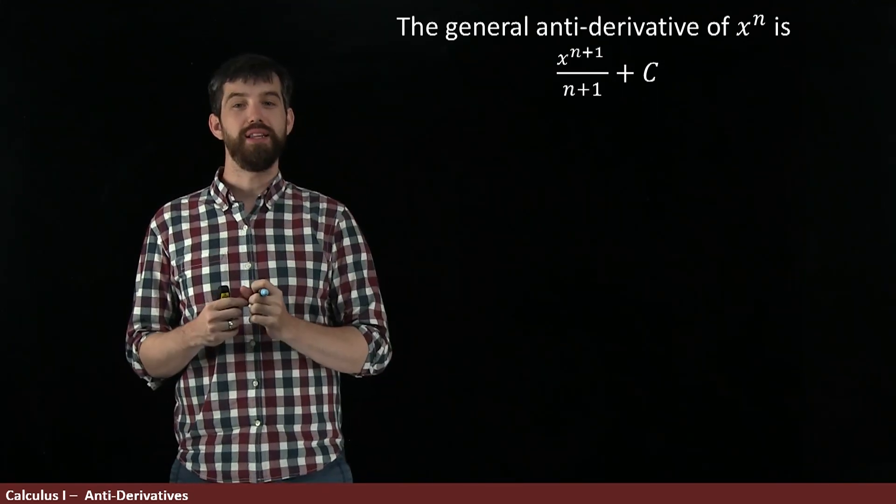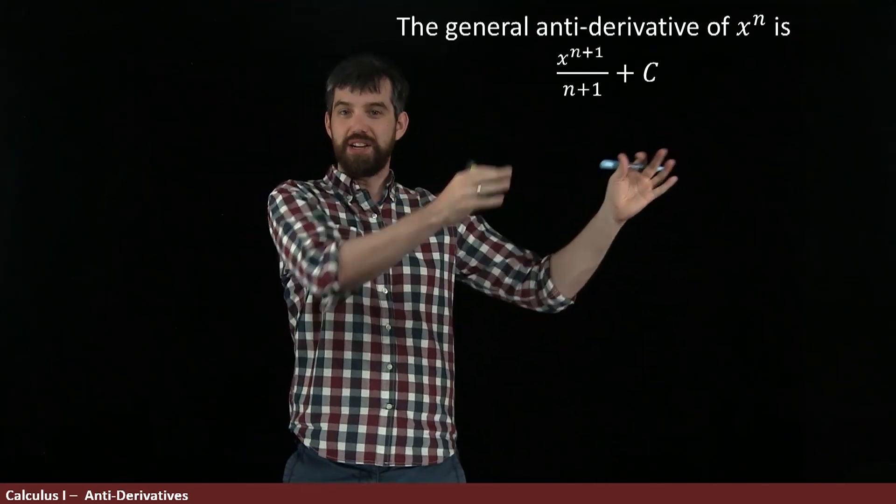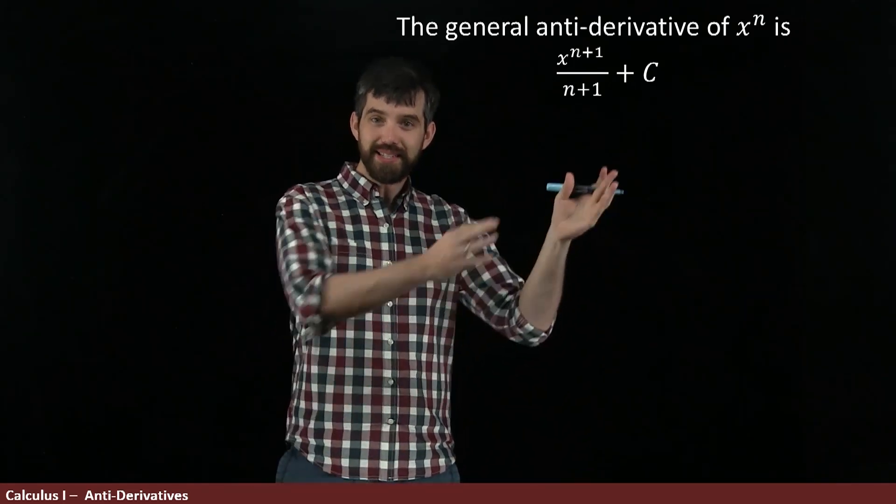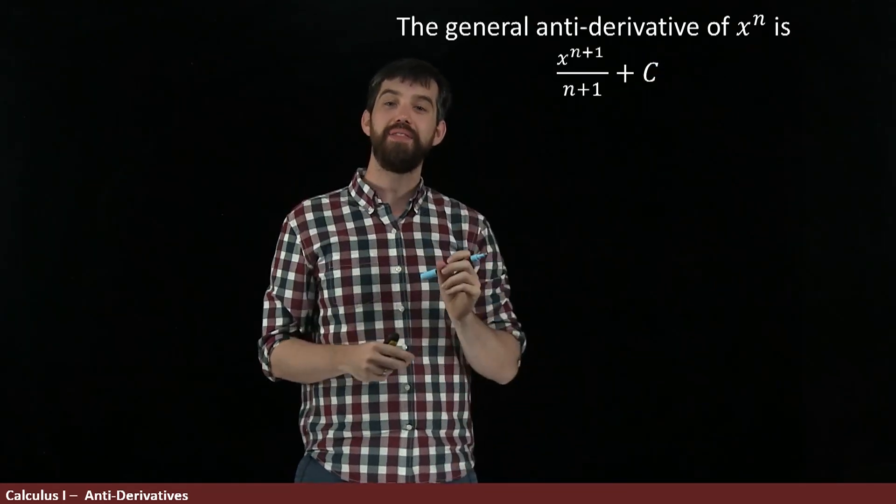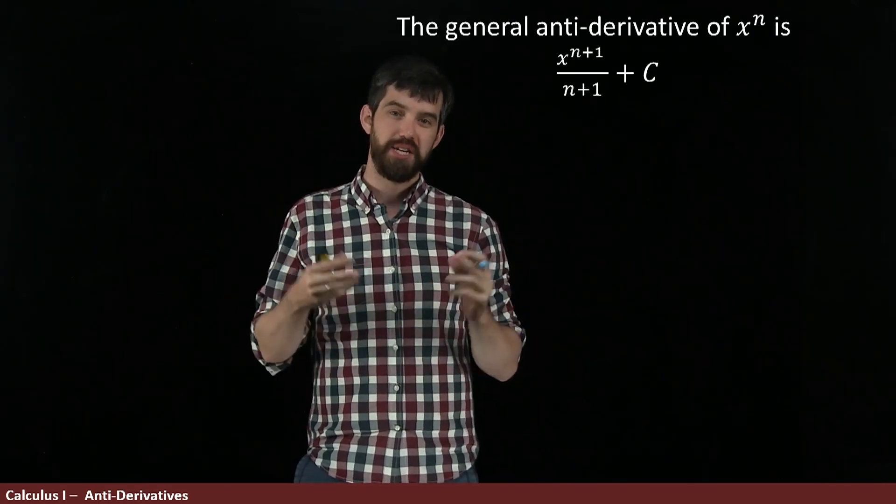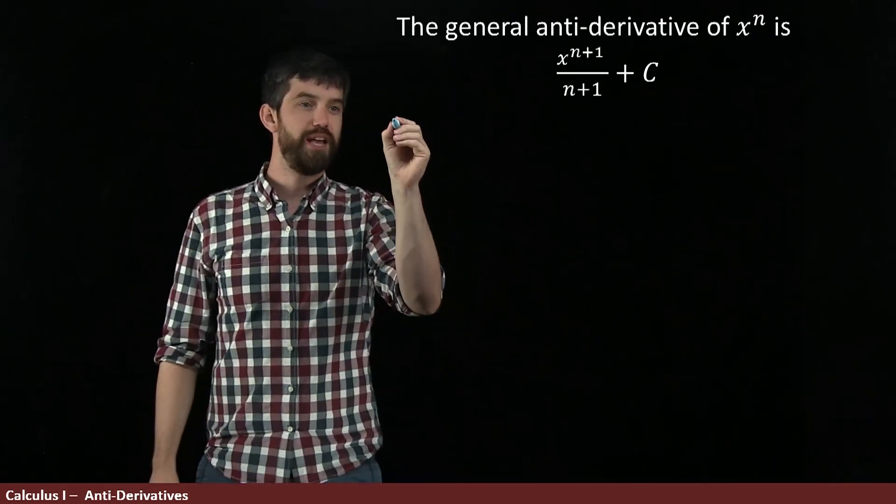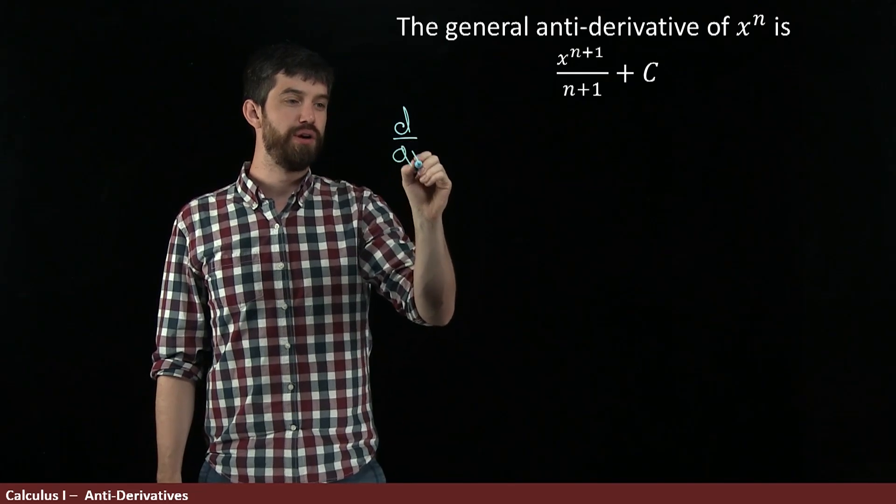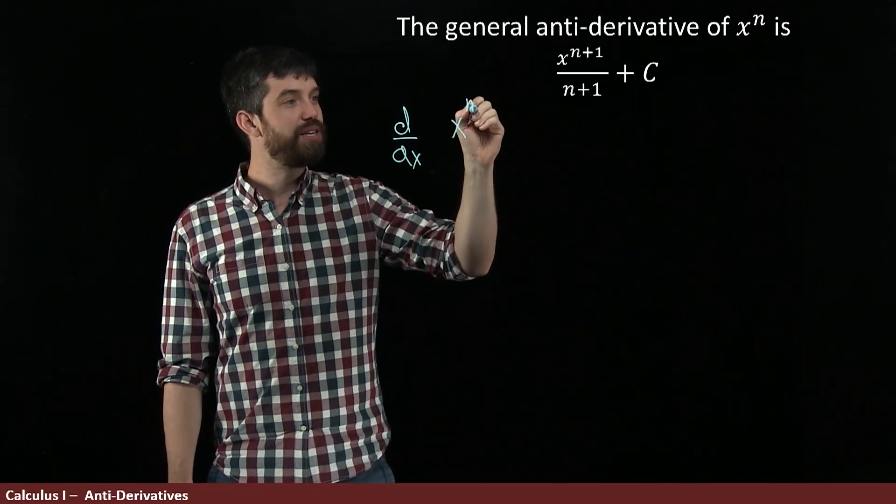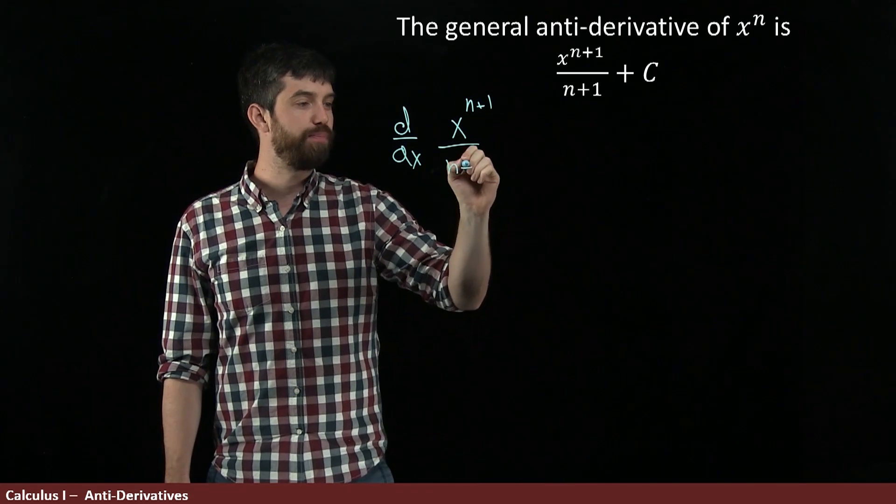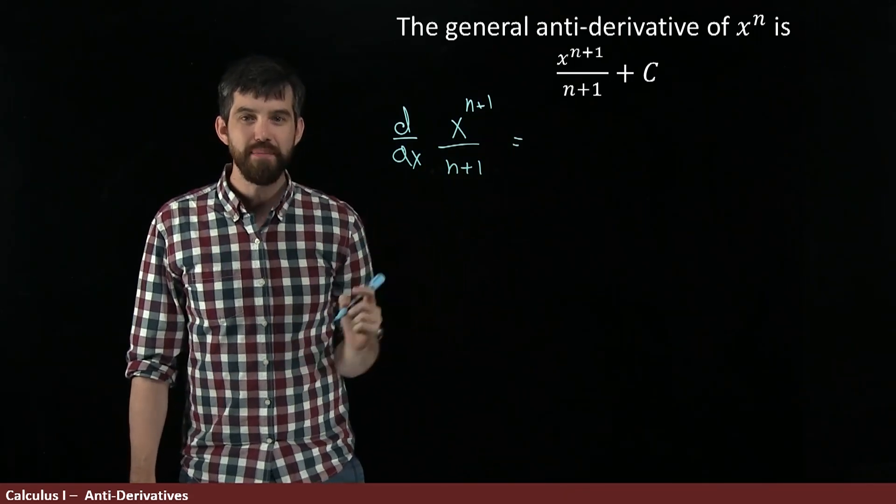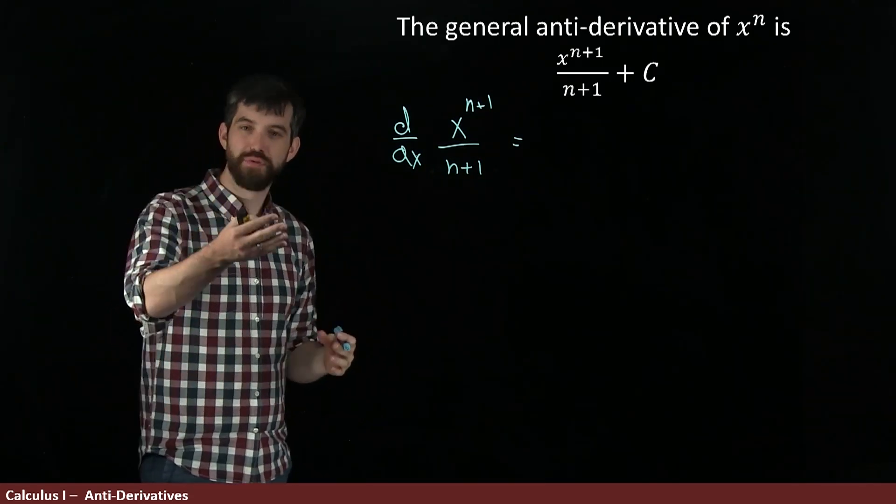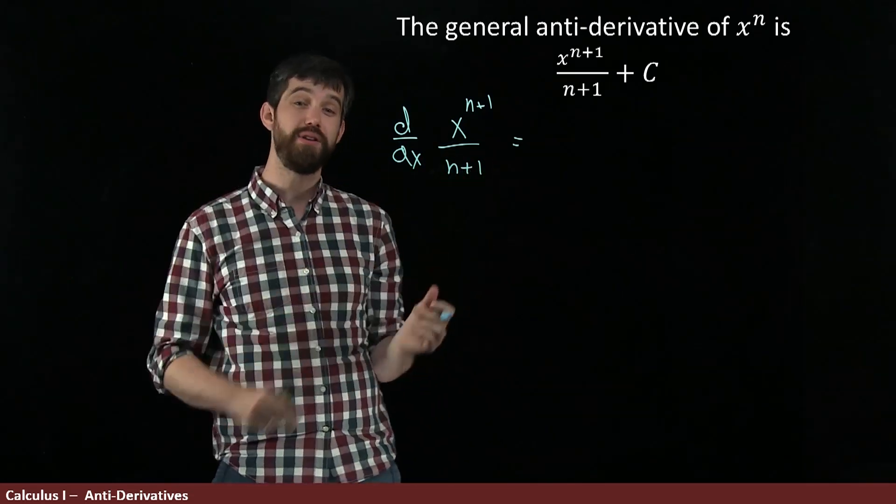But don't take my word for it. Let's verify that this is actually the case. That is, let's take this derivative and see whether we get the x to the n. That's our condition to be an antiderivative. So in other words, if I come along here and I take the derivative with respect to x of this x to the n plus 1 all divided out by n plus 1. Well, now that I'm verifying this with the derivative rule, we can use the power rule. We know how to do that.